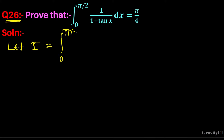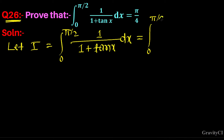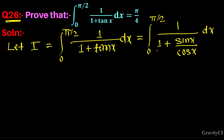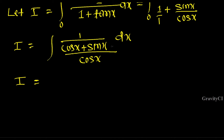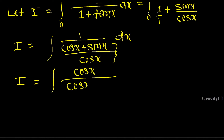We start with I equal to the integral from 0 to pi by 2 of 1 by 1 plus tan x dx. We change tan x to sin x by cos x, then use LCM with cos x. This gives I equal to the integral of cos x by cos x plus sin x dx — this is the reciprocal form.